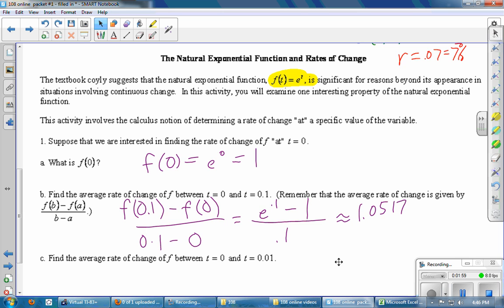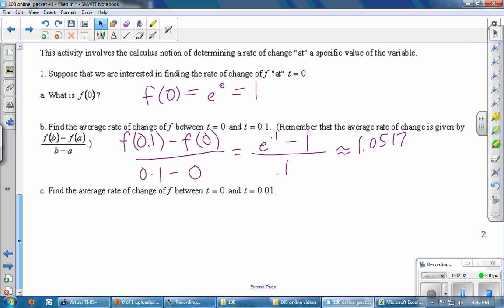Part C, find the average rate of change of f between t equals 0 and t equals 0.01. So what we're doing here is trying to find the rate of change of f at t equals 0, and we're going to do that by picking one number is 0, and the other number is going to be something very close to 0. That's a tiny little interval. And now we're about to find the rate of change between 0 and 0.01. That's an even smaller interval.